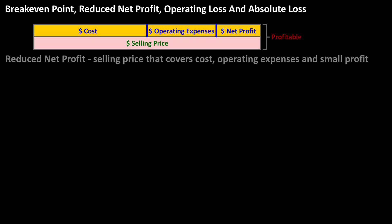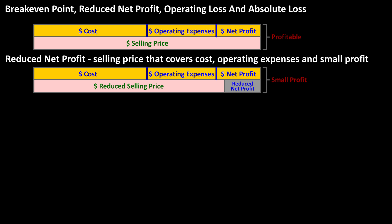A Reduced Net Profit is when an item is marked down and still covers Cost and Operating Expenses, and still provides a small net profit, as you see in this chart.